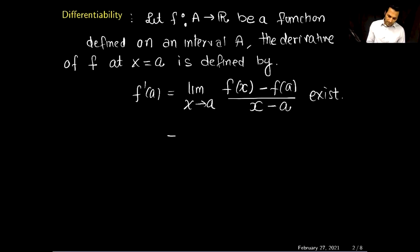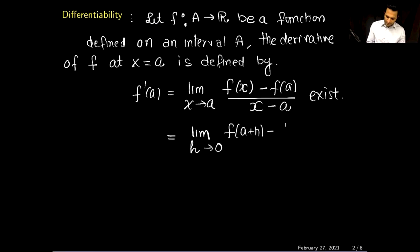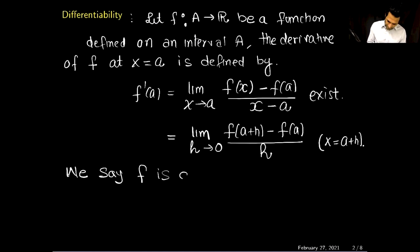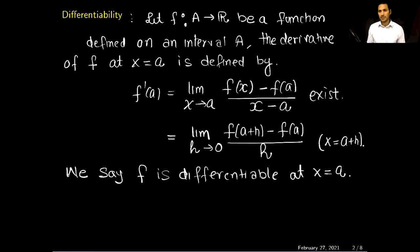We can also make a substitution and rewrite this limit as h approaches 0 of F(a+h) minus F(a) divided by h, where the substitution is x = a + h. If this limit exists, we say F is differentiable at x = a. If F is differentiable at every point of the set, then we say F is differentiable on the set.